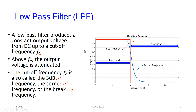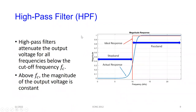High pass filters do the opposite: everything from DC up to the cutoff frequency is totally stopped, and as soon as you reach the cutoff frequency it passes everything with the same amplitude all the way through to high frequencies. Again, the red line is the ideal we hope for and the blue line is what we actually get. The stopband for the high pass filter is from DC up to the cutoff, and the passband is everything above that.